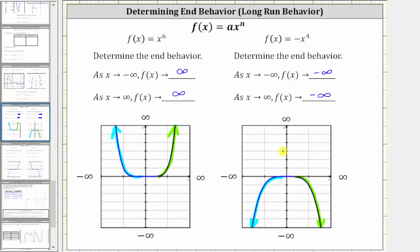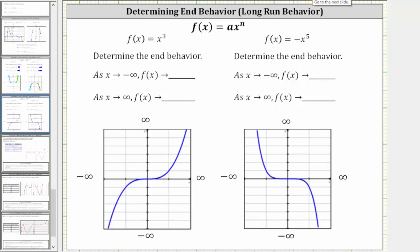Now let's take a look at two examples where the degree is odd. Our first function is f(x) = x³. As x approaches negative infinity, or as we move to the left along the graph, the graph goes down, and therefore the y values approach negative infinity. As x approaches positive infinity, or as we move to the right, the graph goes up, and therefore f(x) approaches positive infinity.